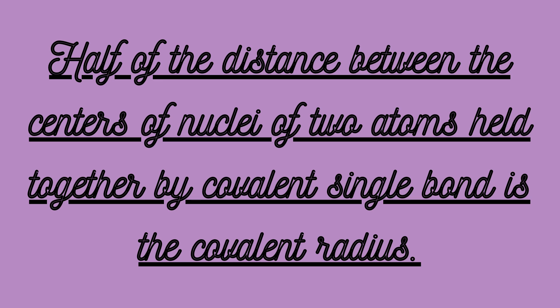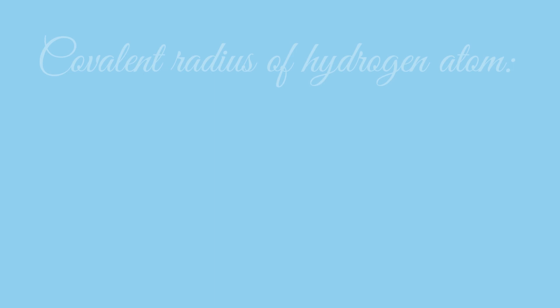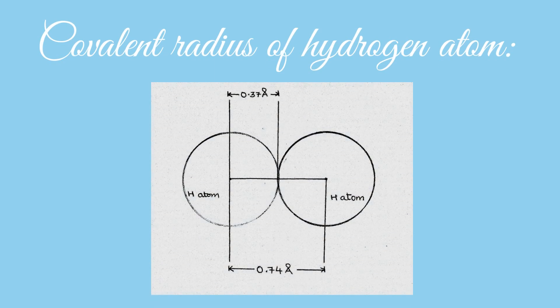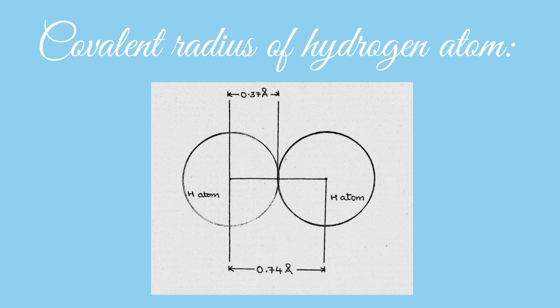The important term here is the covalent single bond. For example, in H2 molecule, the two hydrogen atoms are held together by covalent bond. So, the radius that we will be finding for the hydrogen atom in this case will be called as the covalent radius of hydrogen atom.